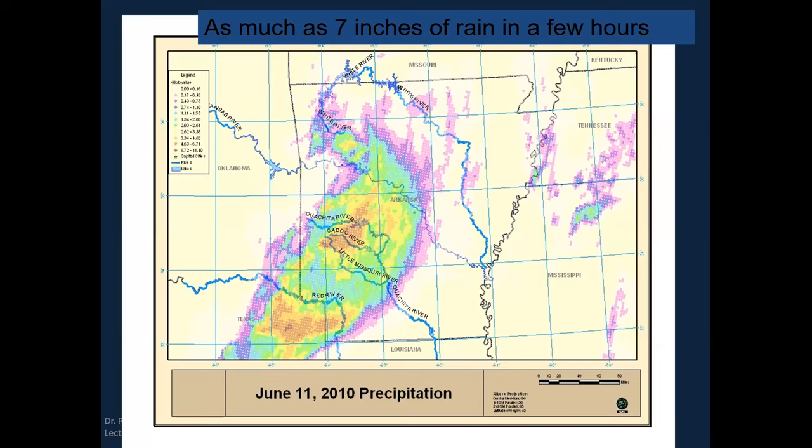This is a plot of the rain event I put together from NEXRAD radar information. The precipitation happened entirely in the overnight hours between 11 PM and around four or five o'clock in the morning. The peak flooding occurred around four or five AM — when people were asleep in the campground — and so there was a lot of devastation.